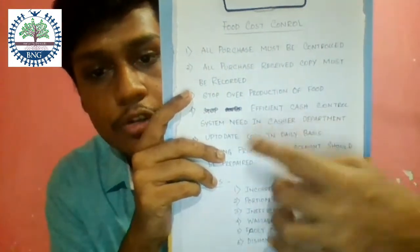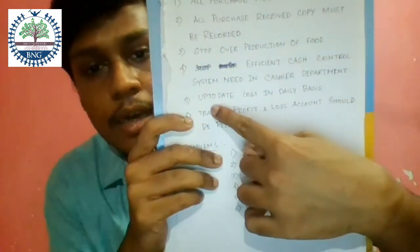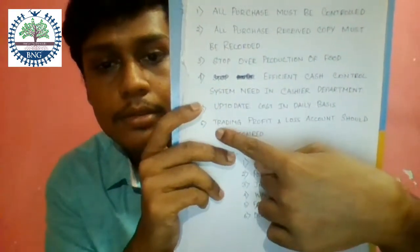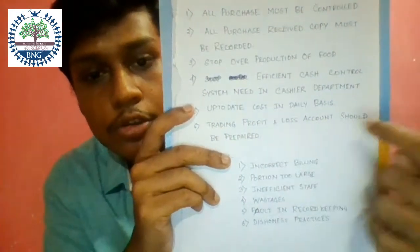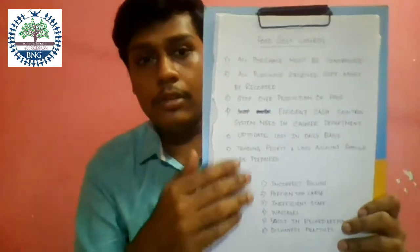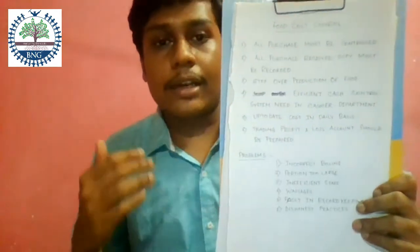Next, an efficient cash control system is needed in the cashier department. Also, keep food cost up to date on a daily basis, because your opening stock and closing stock change daily. The trading profit and loss account should also be prepared and kept up to date. By these measures, you can control your food cost.